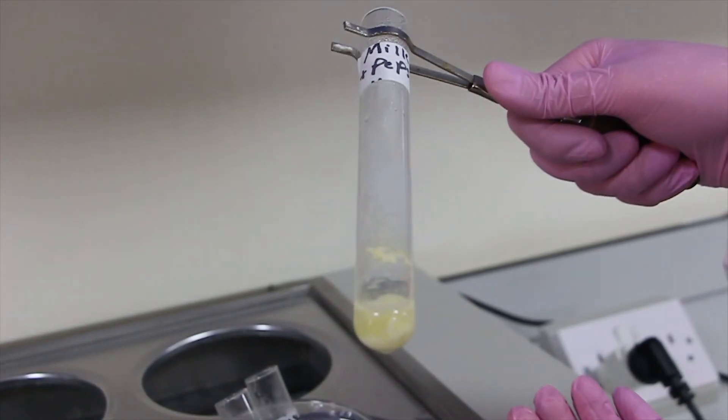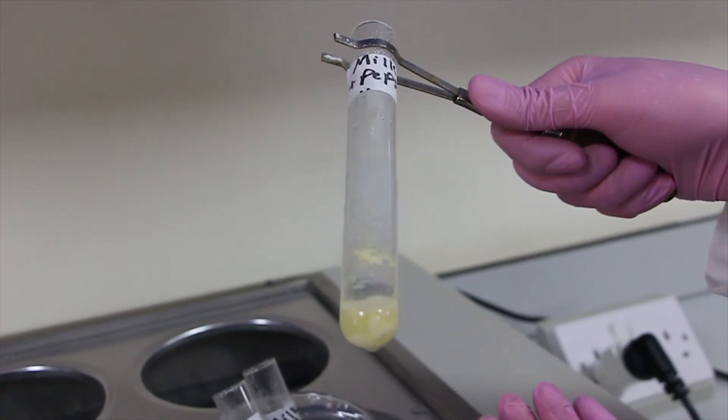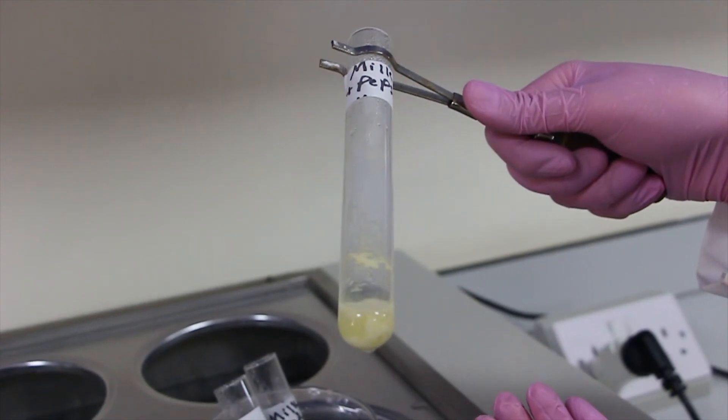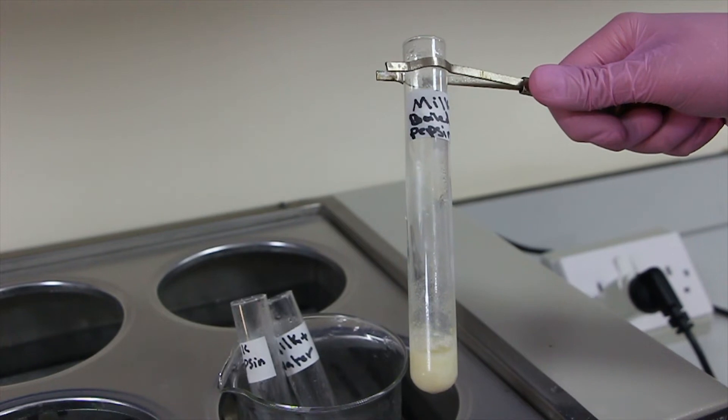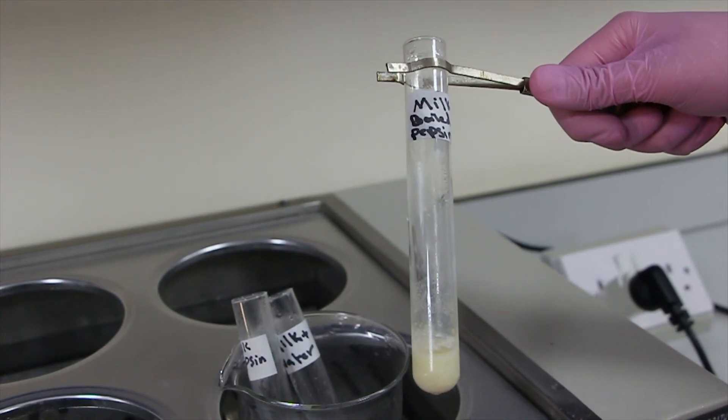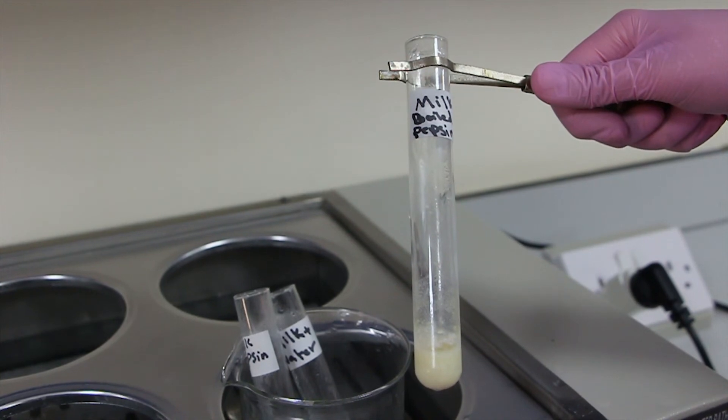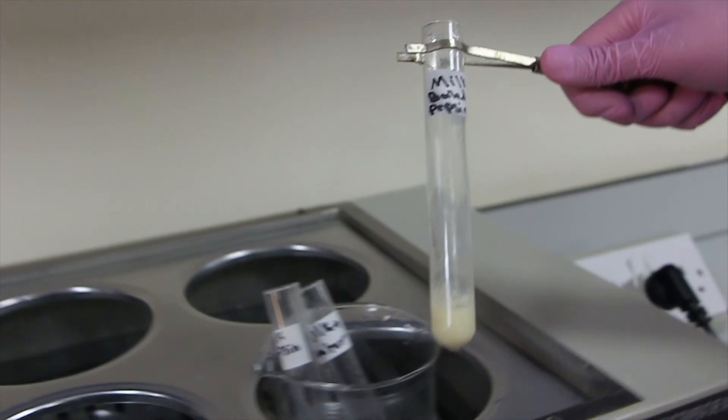If you add pepsin to milk, you can expect the pepsin to start digesting the proteins into smaller polypeptides in the form of coagulation. But if you add boiled pepsin to milk, you can expect no changes, no coagulation, because when you boil the pepsin enzyme it will be denatured, so there is no effect of pepsin on milk.